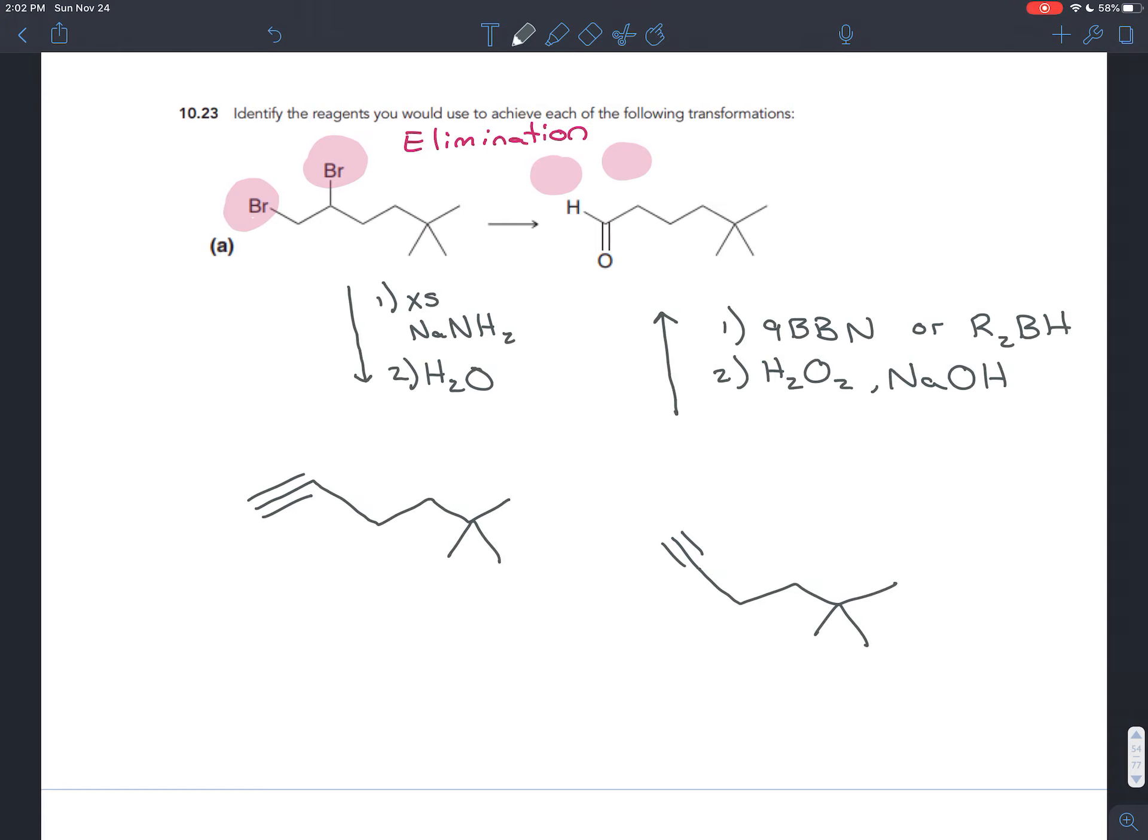But what is this? This is the same molecule we drew earlier. In other words, if we do this elimination, we get that alkyne. Once we have the alkyne, we can do hydroboration oxidation to get the aldehyde.